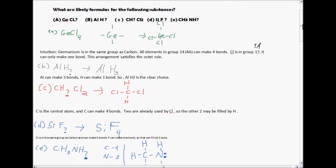So what are the likely formulas for the following substances? Looking at A, GeCl. Now germanium is in the same group as carbon, and all elements in the group 4A can make four bonds. Chlorine is in 7A. It can only make one bond, so this arrangement that I show here with germanium surrounded by four chlorines is the answer, so it would be GeCl4.